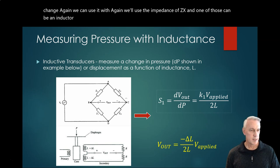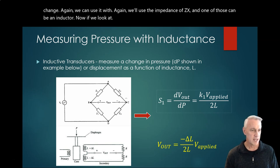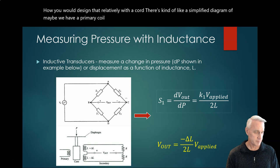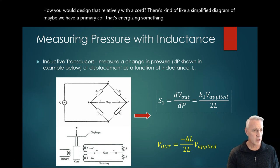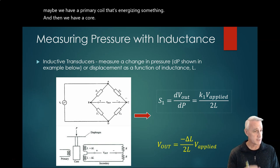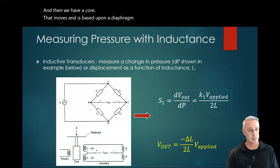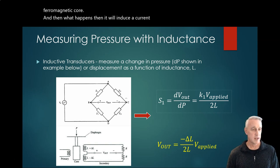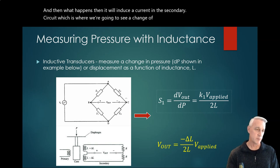Now if we look at how you would design that with a core, there's a simplified diagram where we have a primary coil that's energizing something, and then we have a core that moves based upon a diaphragm. This core has to be some type of ferromagnetic core, and then it will induce a current in the secondary circuit, which is where we're going to see a change of inductance based upon where that core moves.